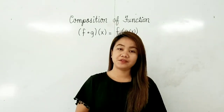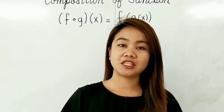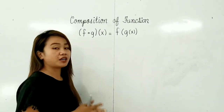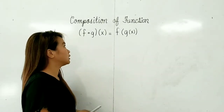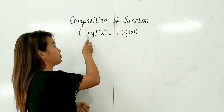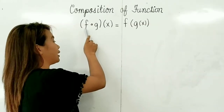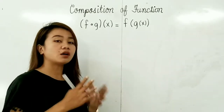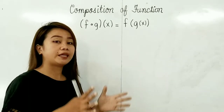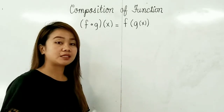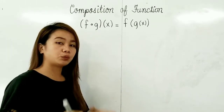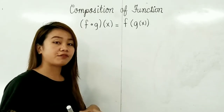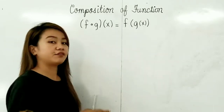Hello students! For today's video, I will discuss the composition of functions. First, let us define composition of functions. Let f and g be functions. The composite function, denoted by f composed of g, is defined by f composed of g of x is equal to f of g of x. Composition of functions is like putting one or more functions into another function to produce an output. The process of finding the composite function is called the composition of functions.